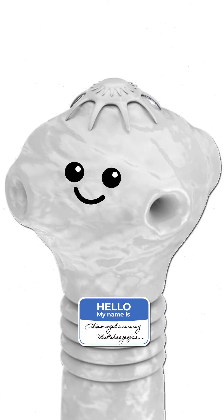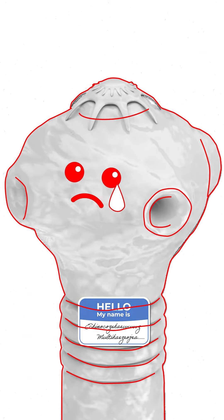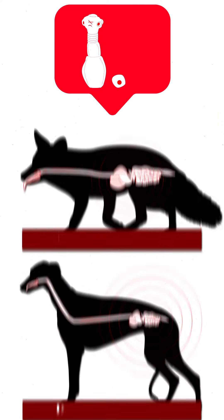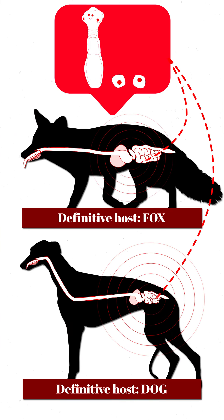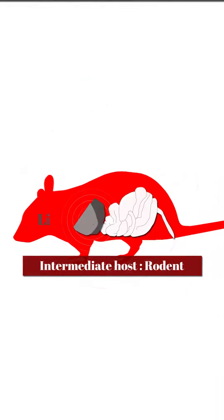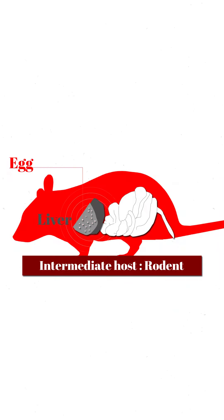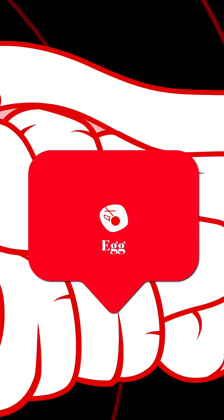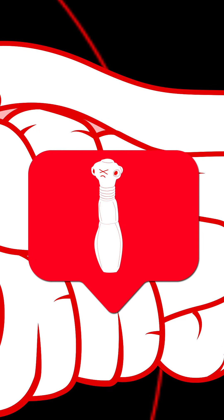This parasite not only has a complicated name, but also a complicated life. As adults, they lay their eggs here. The eggs are dispersed like this and infect rodents. Then they develop here, until the rodent is eaten by a dog or fox and the mature eggs become adults here.